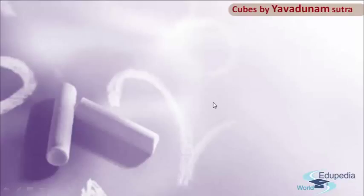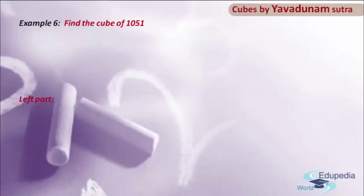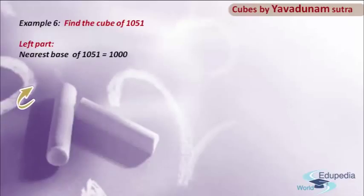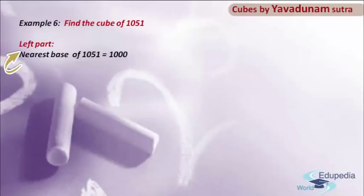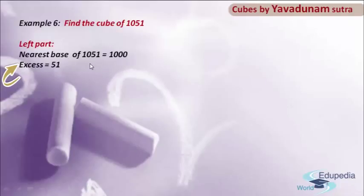The example I am going to take in this session is: find the cube of 1051. In order to find the cube of a 4-digit number, we have some parts of the process that we have to follow. The first part of the process is the left part. Here in the left part, the first step is to find the nearest base of the given number. The given number is 1051 and the nearest base for this number is 1000. Moving to step number 2, we have to find the excess, which is found by comparing the given number with the base. The given number is 1051 and the base is 1000, so we get an excess of 51.